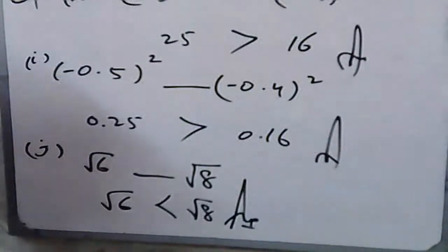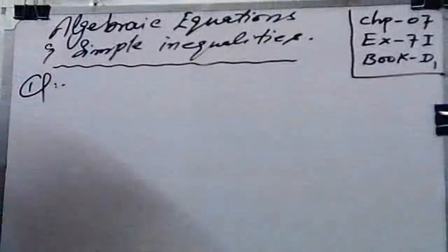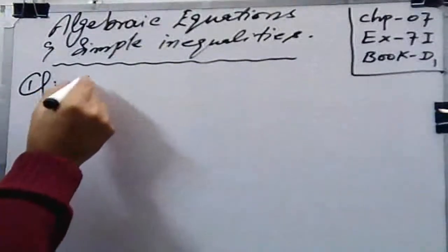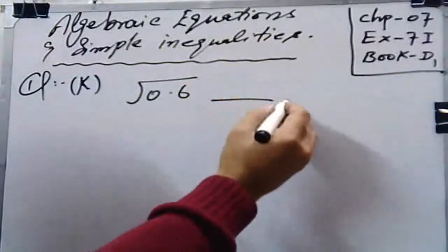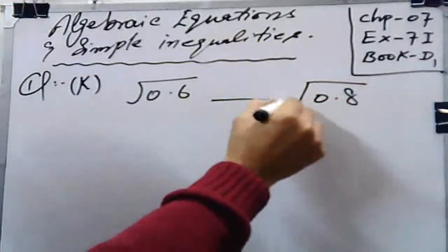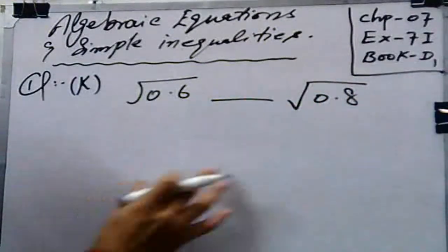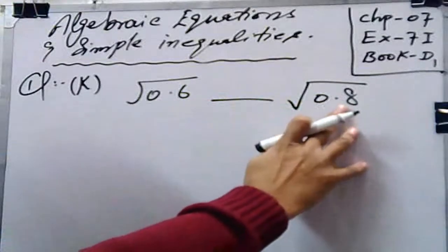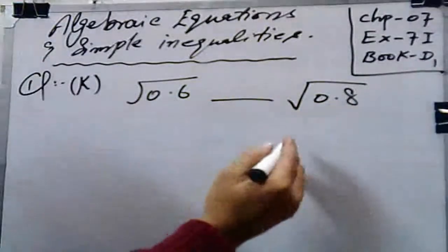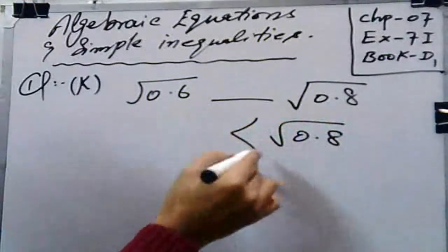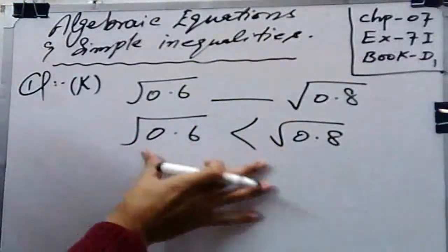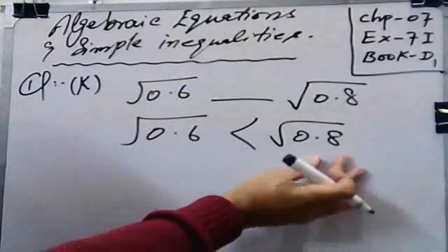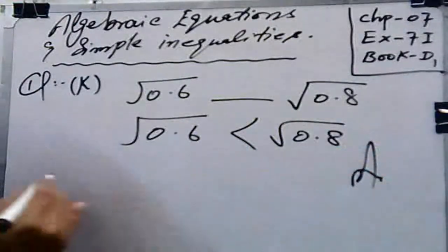In part k: √0.6 dash √0.8. Since 0.8 is greater than 0.6, and both are under square roots, √0.8 is greater than √0.6. This follows the universal formula: when both quantities are under square roots, the greater value produces the greater result.